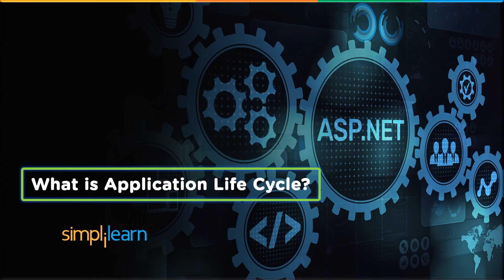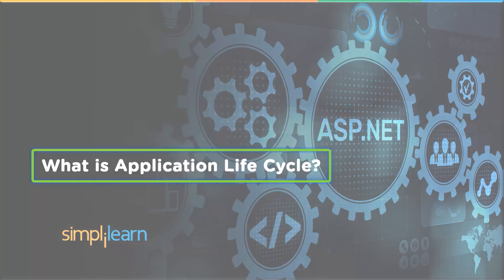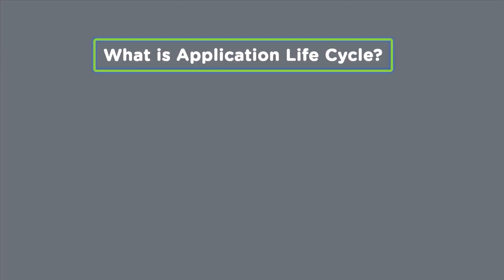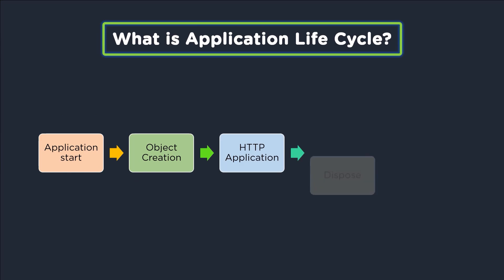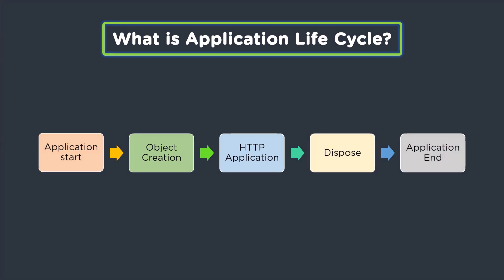We shall have a look at both of these types in detail. First, let's have a look at the application life cycle. The application life cycle is the part that starts when the user makes a request. These requests involve several stages: application start, object creation, HTTP application, dispose, and application end.